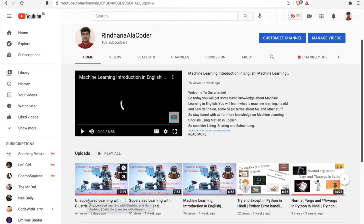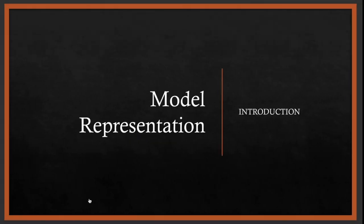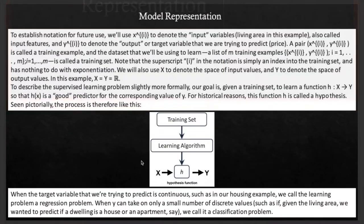So let's begin. This is model representation. First of all, I will give you some notations for future use. So this is x superscript one to represent the first input variable. These are also called input features, the features which we use in our algorithm to give the input.